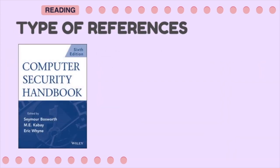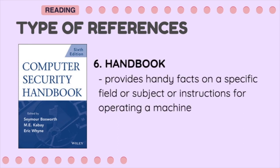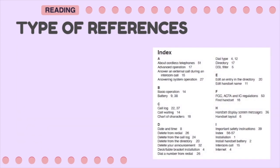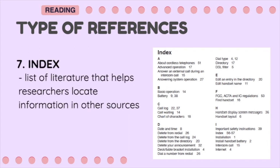The sixth type of reference is the Handbook. It provides handy facts on a specific field or subject, or instructions for operating a machine. A lot of online handbooks are available on the net depending on the specific one you need. The seventh type of reference is the Index. It is a list of literature that helps researchers locate information in other sources like periodicals, anthologies, newspapers, and others.